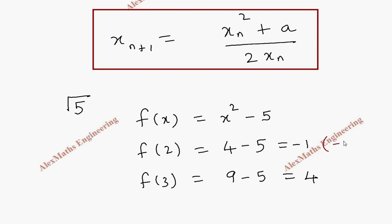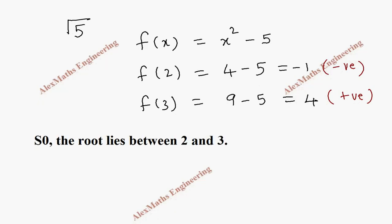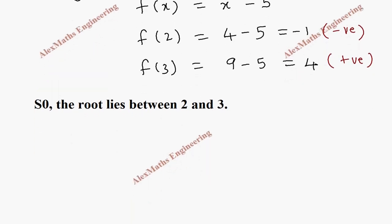And hence, we come to know the root lies between 2 and 3. Now let's choose x naught value closer to 2. Let's take 2.2 because the modulus value of f of 2 is lesser than the f of 3.